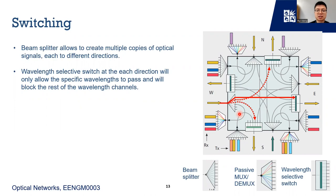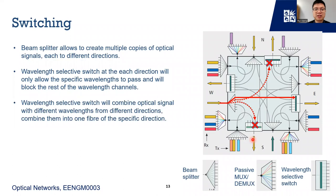For example, the red optical signal can go to the east but will be blocked by the north and south wavelength selective switches. In the big picture, the red optical signal is switched to the east port. The wavelength selective switch also combines optical signals with different wavelengths from different directions — for example, red from the west, yellow from the north, and green from the south — combining those signals into one fiber and sending them to the east direction.